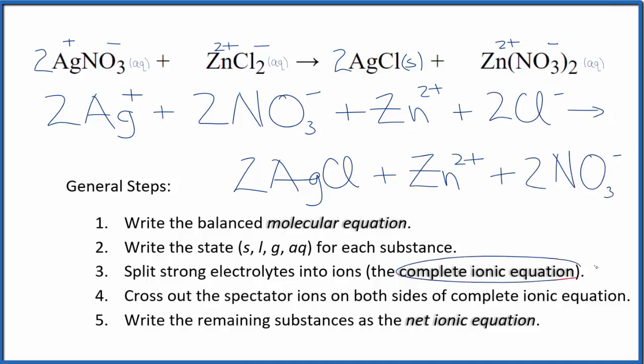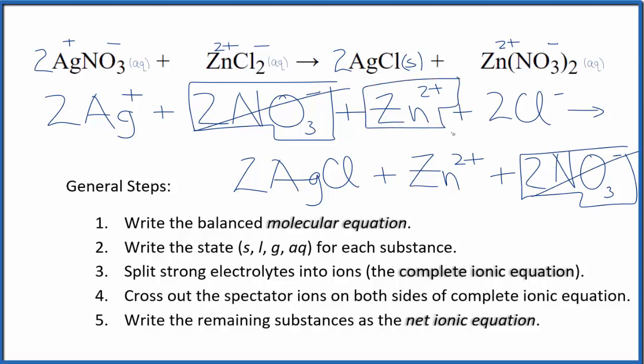So this is the complete ionic equation. Now we can cross out spectator ions. They're on both sides of the complete ionic equation. So I have the reactants up here, products down here. I can see two nitrate ions right here, and again in the products. So I can cross those out, they're spectator ions. In the reactants, I have two zinc ions, and in the products. Let's cross those out, they're spectator ions.